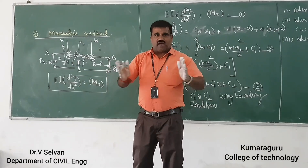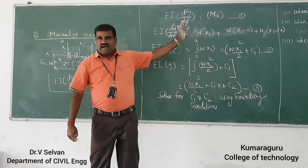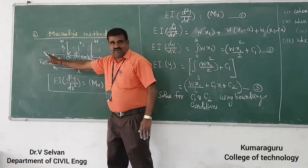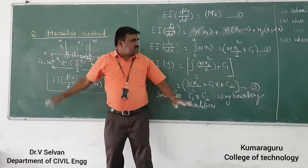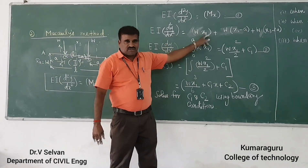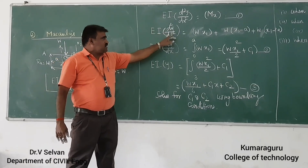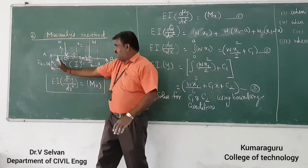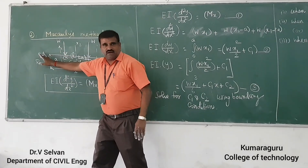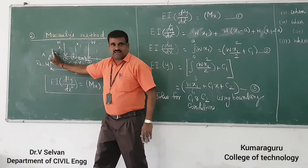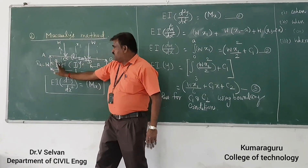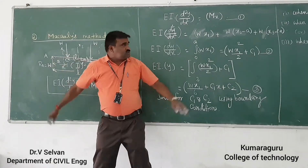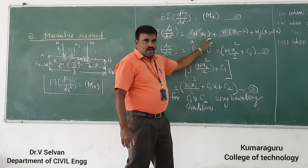In Macaulay's method, one general equation is applicable for all regions. For the first region A-C, the bending moment equation is: EI d²y/dx² = RA·x₁, since taking the left hand side, the bending moment at section x₁ is RA into x₁.